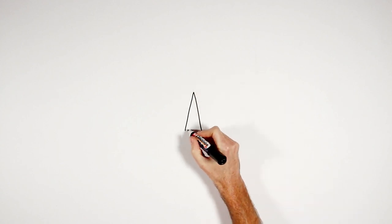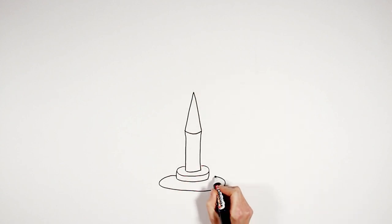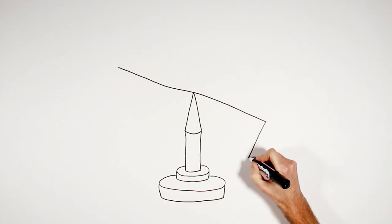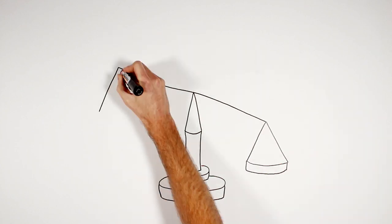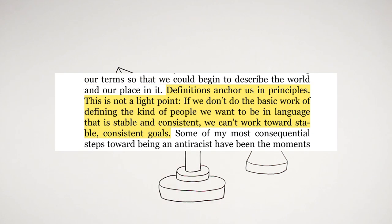The first chapter of How to Be an Anti-Racist focused on a couple of things: the start of Kendi's personal story, and then some really helpful definitions. Here's why this was important for Kendi: definitions anchor us in principles. This is not a light point. If we don't do the basic work of defining the kind of people we want to be in language that is stable and consistent, we can't work towards stable, consistent goals.